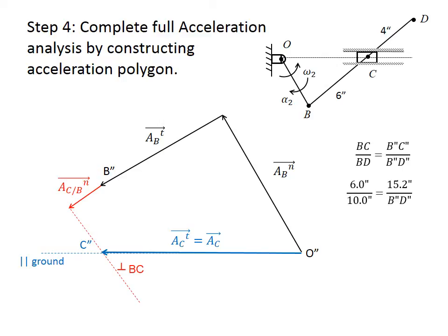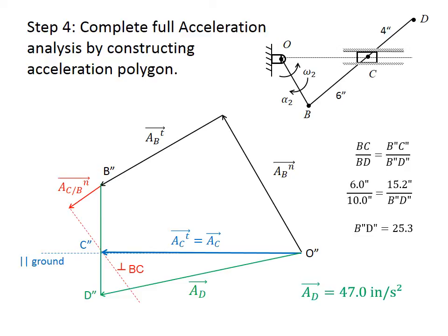Substituting the actual dimensions — 6 inches over 10 inches — and measuring B'C' on the acceleration polygon, we can find the length B'D'. To locate D', we connect B' to C' and extend the line to find D' based on that length. Finally, connecting O' to D' gives the acceleration of point D, which is the total acceleration of point D. Measuring the scaled acceleration polygon gives the acceleration of point D. This method is valid for finding the acceleration of any desired point in the mechanism using the acceleration polygon.